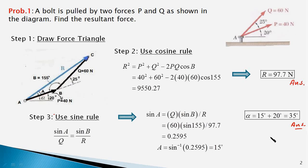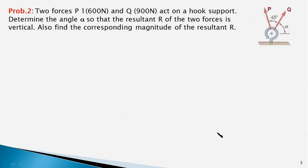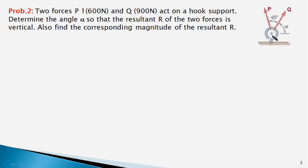Now let us work out the second problem, which is slightly different. Here the two forces P and Q act on a hook. Although it is not apparent, the lines of action of these two forces meet at a point and therefore they are concurrent forces. The angle between them is 45 degrees. We know the magnitude of these two forces and we have to find the angle alpha that force Q makes with the horizontal so that the resultant is in the vertical direction.